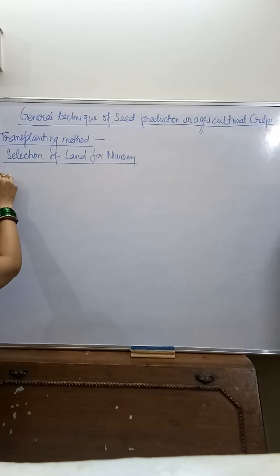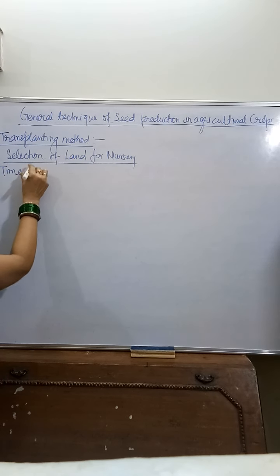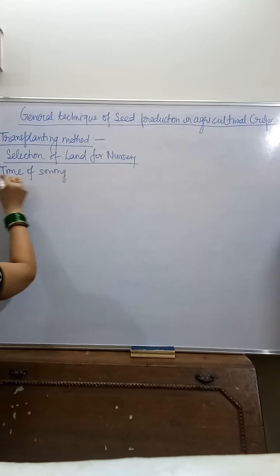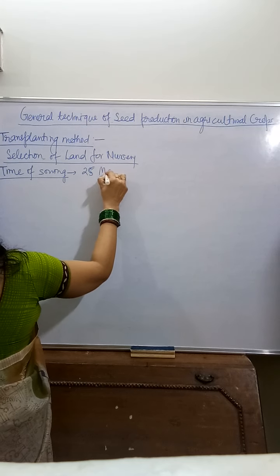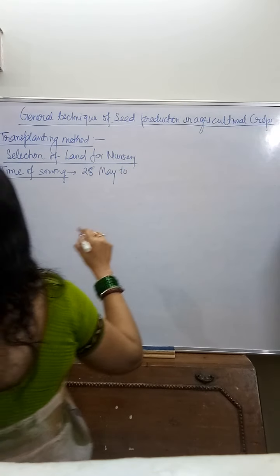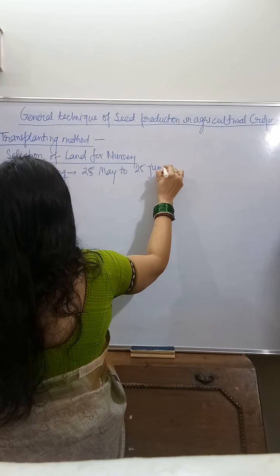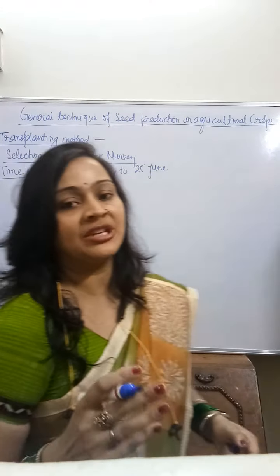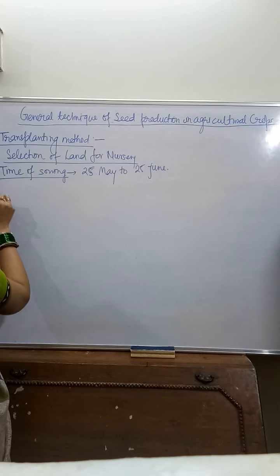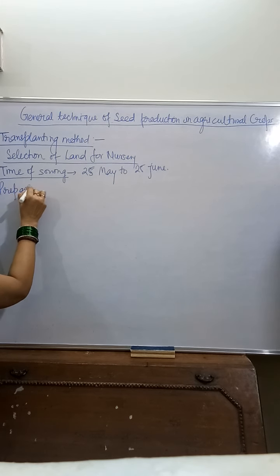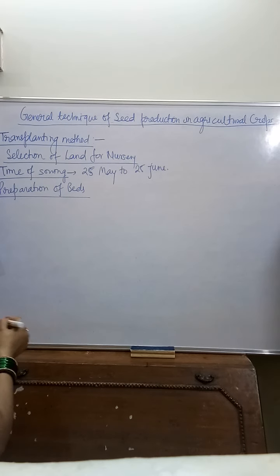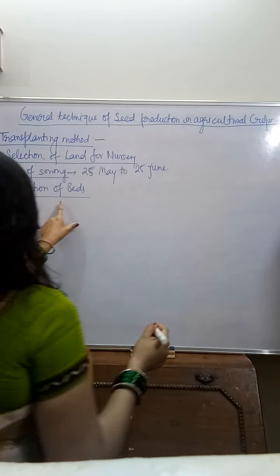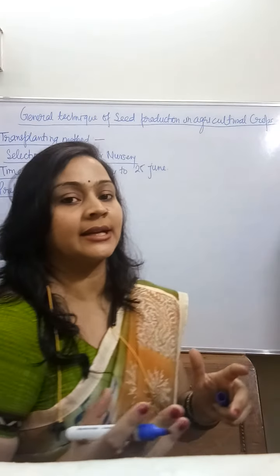The second technique is time of sowing. It is from 25 May to 25 June — 25 मई से 25 जून के बीच में sowing की जाती है। The third is preparation of beds — nursery के लिए जो bed तैयार करते हैं उसको bed कहते हैं।